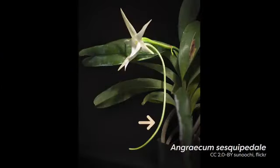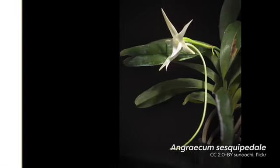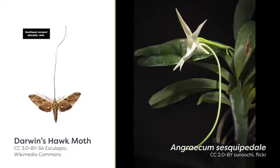This orchid has an exceptionally long nectar spur, the tubular extension where nectar is stored. An adult Darwin's hawk moth is a specialized pollinator that feeds primarily on the nectar of this particular orchid species. The length of the nectar spur makes it difficult for other pollinators to reach the nectar, and so the long proboscis of this moth gives it exclusive access to the resource.